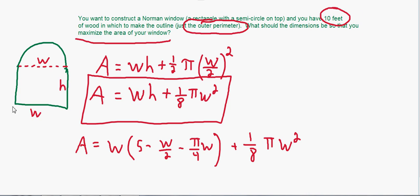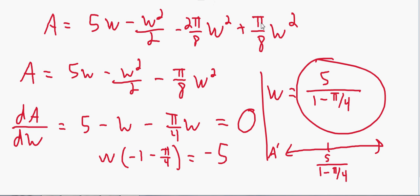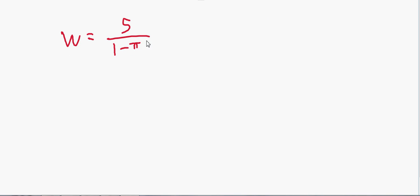We can confirm this is a maximum using the first derivative test. Our number line for A'(w) has the critical number 5/(1 - π/4). Since w must be between 0 and 10, plugging in a value less than the critical number — say 1 — gives 5 - 1 - π/4, which is positive. Plugging in a larger value — say 7 — gives a negative result. So the derivative goes from positive to negative, confirming a maximum at w = 5/(1 - π/4).